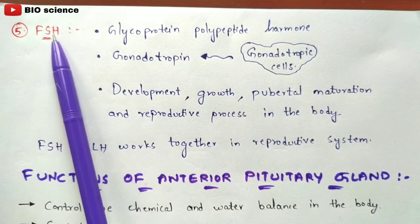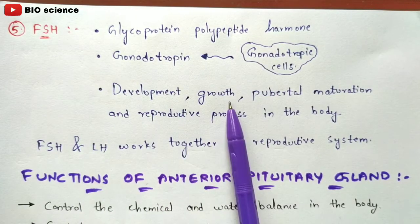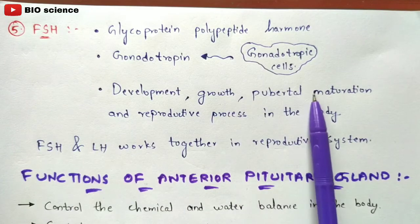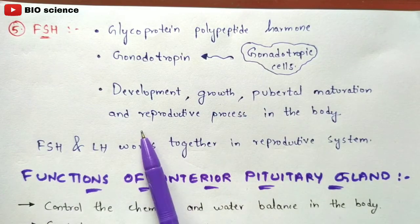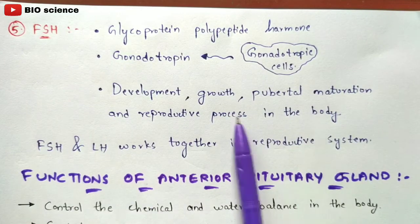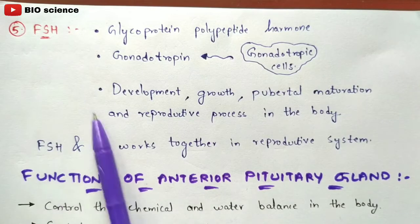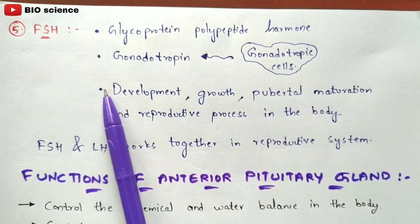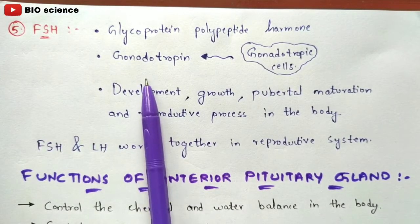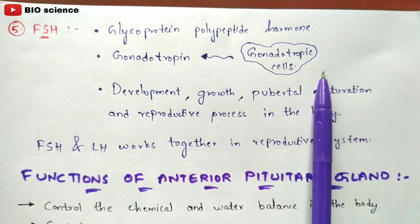The major functions of FSH (gonadotropin) are development and growth, pubertal maturation, and the reproductive process in the body. These are the major functions performed by follicle stimulating hormone, secreted from the gonadotropic cells.